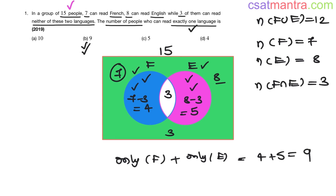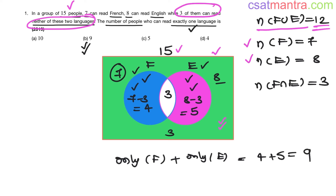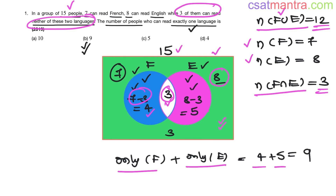To recap: the sample space — total number of people — is 15. It is given that 3 of them can read neither of the 2 languages, which is the green color area. So N(F ∪ E) = 15 − 3 = 12. Using the union formula with the given values for French (7) and English (8), we find N(F ∩ E) = 3. Number of people who read only French is 7 − 3 = 4. Number of people who read only English is 8 − 3 = 5. So the number of people who can read exactly one language is 4 + 5 = 9.